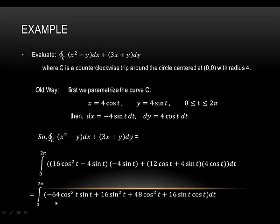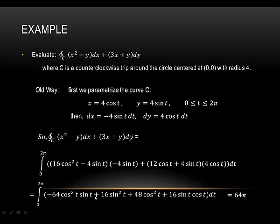Simplifying gives the integral of −64cos²(t)sin(t) + 16sin²(t) + 48cos²(t) + 16sin(t)cos(t), all integrated with respect to t from 0 to 2π. I'll leave this as an exercise — it's a tough one and will take quite a long time. If you do it using trig identities, you should get 64π. I'll be honest, I used Mathematica. But the main focus of this video is to do this another way.